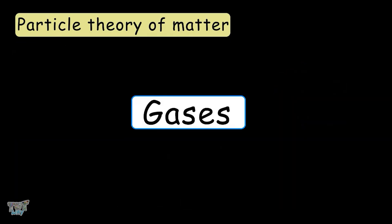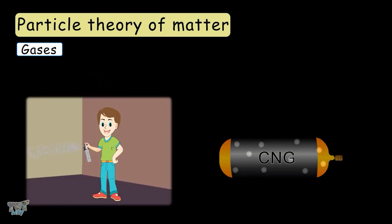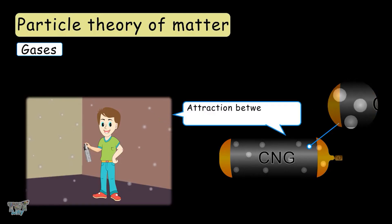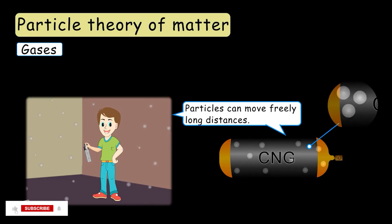Next are gases. Gases are also made up of tiny particles and empty spaces between them are very large. This is why the attraction between them is negligible and particles can move freely along distances.